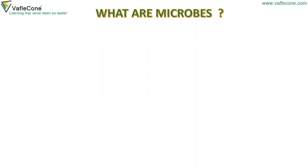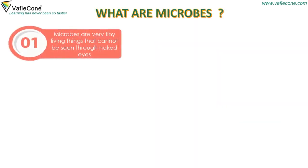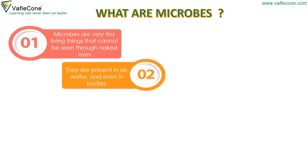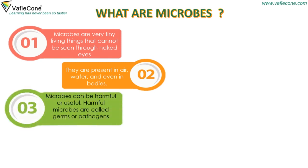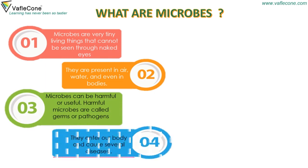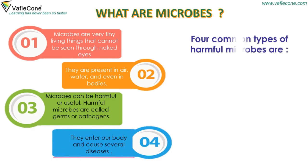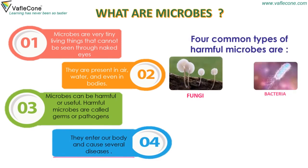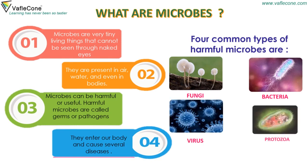Microbes are very tiny living things that cannot be seen through naked eyes. They are present in air, water, and even in bodies. Microbes can be harmful or useful. Harmful microbes are called germs or pathogens. They enter our body and cause several diseases. Four common types of harmful microbes are fungi, bacteria, virus, and protozoa.